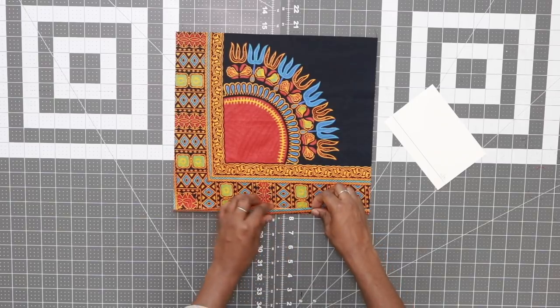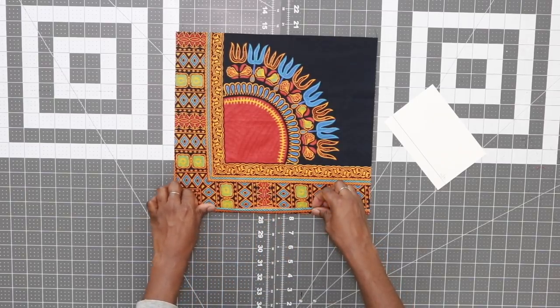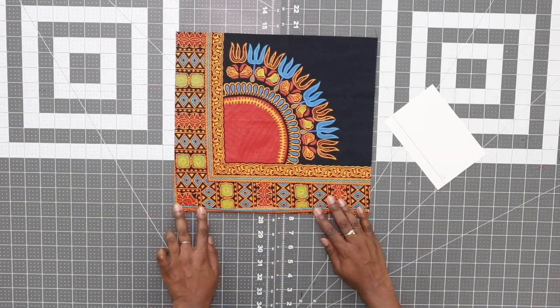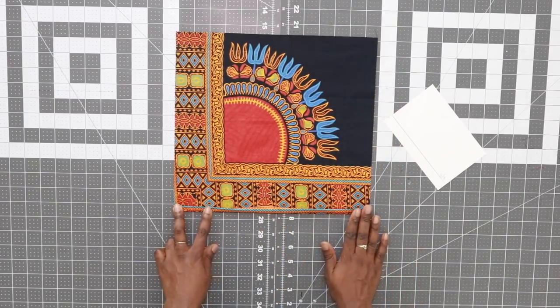That's going to hide the raw edge on the inside. Then take your iron and press. And you're going to do that all the way down and you're going to repeat this process on the other 3 sides as well.